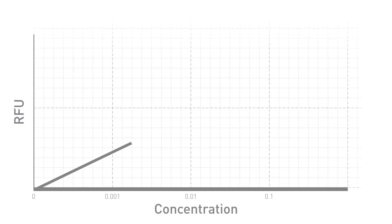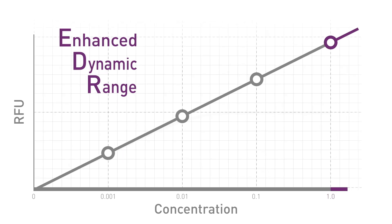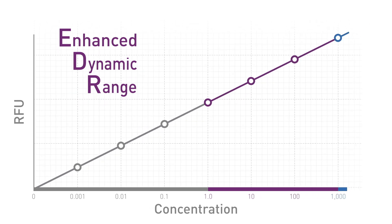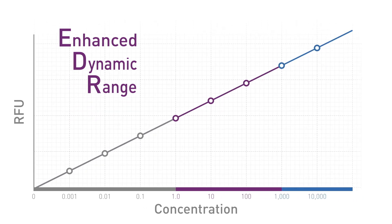Predicting the signal intensity of experimental samples is difficult, especially in kinetic tests. Simplify your assay setup with enhanced dynamic range technology, where both high and low intensity signals can be acquired in a single run.